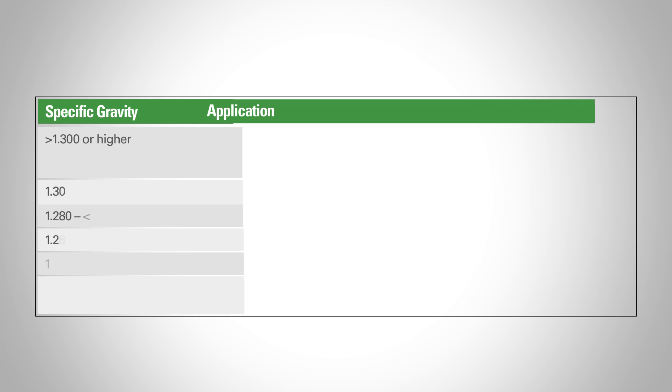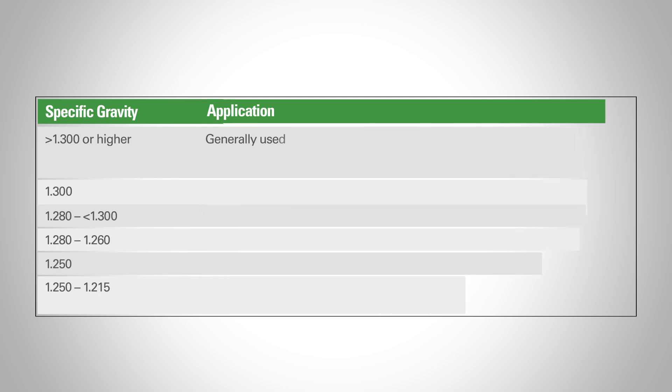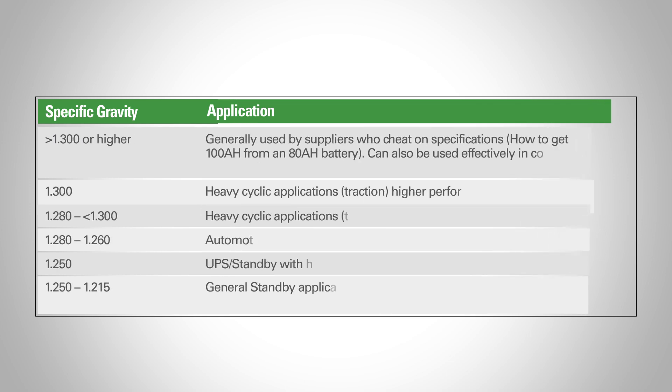Proper specific gravity for a given battery is determined by the application it will be used in, taking into account operating temperature and desired end-of-life characteristics.